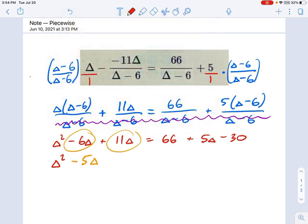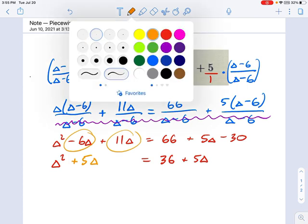And that's going to be equal to, well, 66 minus 30 is 36. And I still have that five delta. So let's bring the five delta over by subtracting. So we're going to have, oh, I'm sorry. That's embarrassing. What's negative six plus 11? It's not negative.